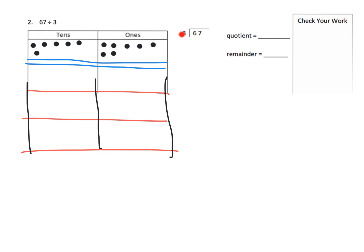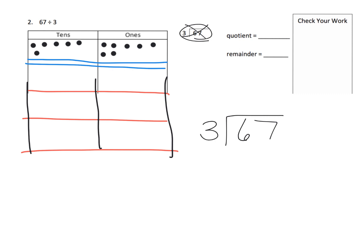Over here it says 67 divided by 3. Parents and teachers, a lot of kids read this as 3 divided by 67, so pay attention to that. Let's correct them and get them speaking mathematics correctly right from the get-go. So: 67 divided by 3.